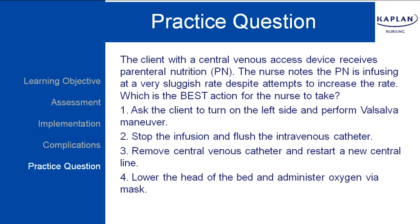Practice question: The client with a central venous access device receives parenteral nutrition. The nurse notes that the PN is infusing at a very sluggish rate despite attempts to increase the rate. Which is the best action for the nurse to take? Number one, ask the client to turn on the left side and perform Valsalva maneuver. Number two, stop the infusion and flush the intravenous catheter. Number three, remove the central venous catheter and restart a new central line. Or number four, lower the head of the bed and administer oxygen via mask.